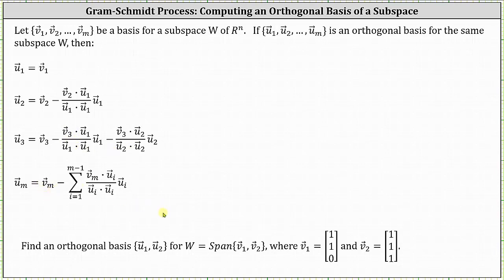So let's take a look at an example. We're asked to find an orthogonal basis, which is the set containing the vectors U sub one and U sub two for W, where W is equal to the span of the set containing the vectors V sub one and V sub two, where vector V sub one is the vector (1, 1, 0) and vector V sub two is equal to the vector (1, 1, 1).